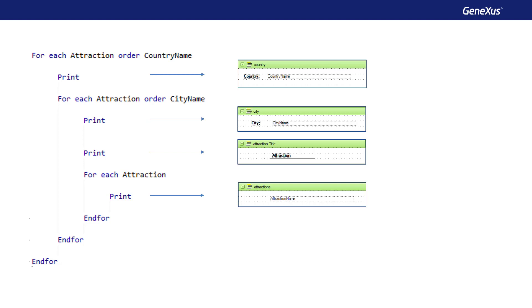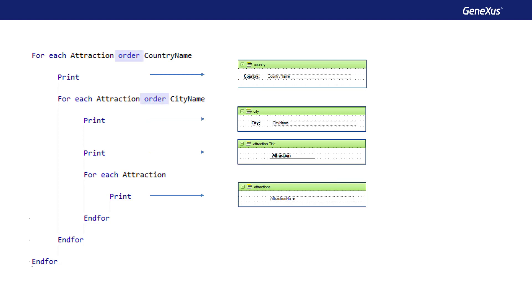That is to say, we will have to implement a double control break, in which first, we group by country, and within it, we'll group by city. Within the latter group, we'll show the names of all attractions. To do so, we will define the grouping criteria using order clauses. Remember that the order is very important in a control break. It not only indicates the attribute or attributes used to list data, but also sets how to group it. We could indicate an order for the innermost foreach, but this order will only be used in the conventional manner — that is, it will be used only for ordering purposes.